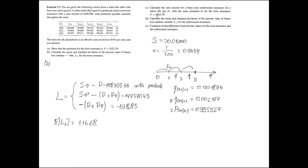We can also obtain the second moment of this random variable L1 by squaring the possible outcomes.